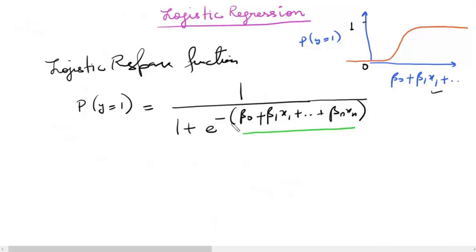So we can verify that this always stays a probability, that the maximum value this can take is 1 and the minimum value this can take is 0. So you can do that by taking x to be infinity once and then taking x to be minus infinity because this is the only variable in this equation.